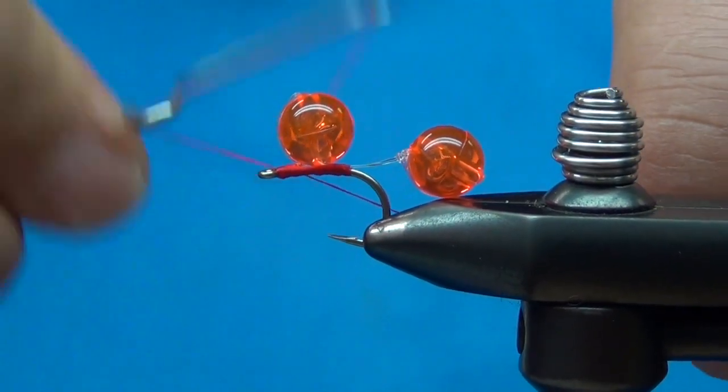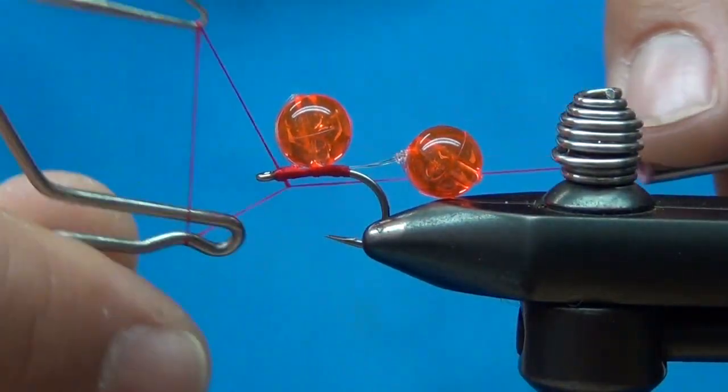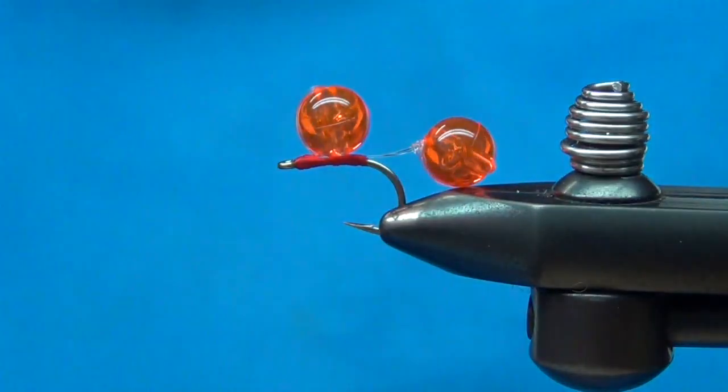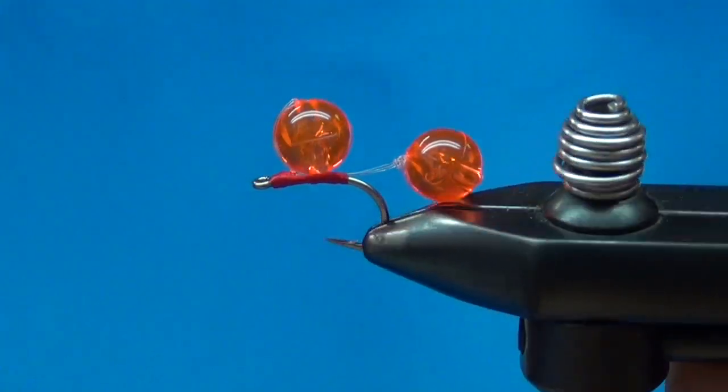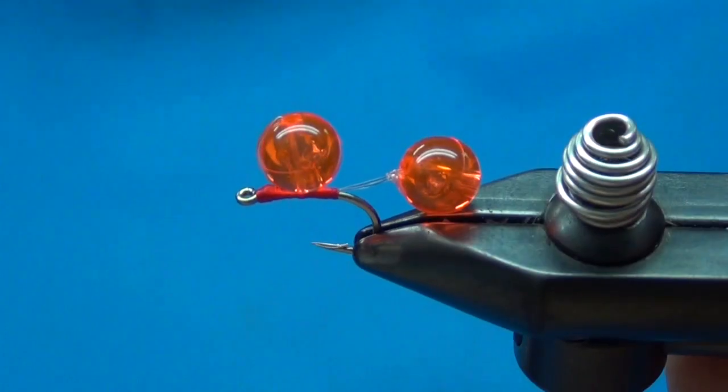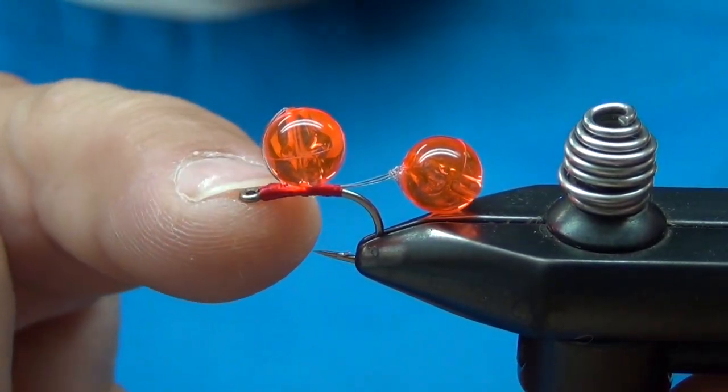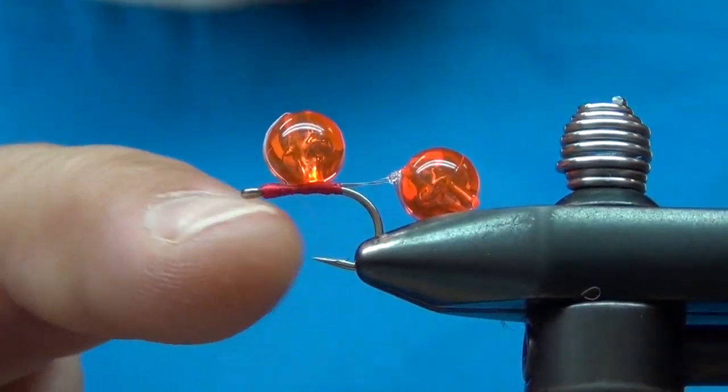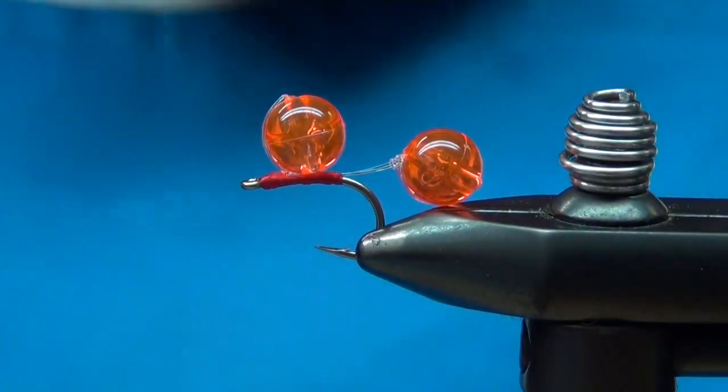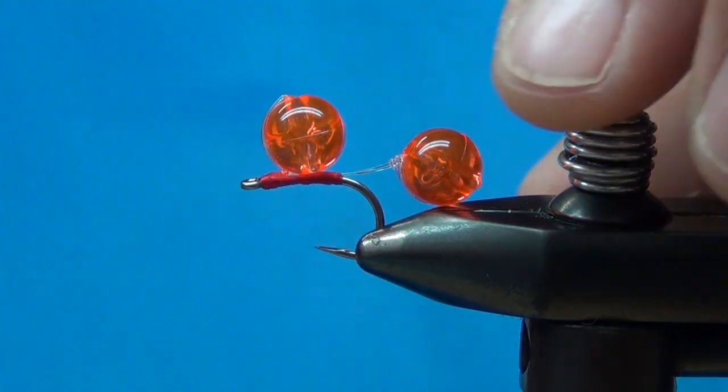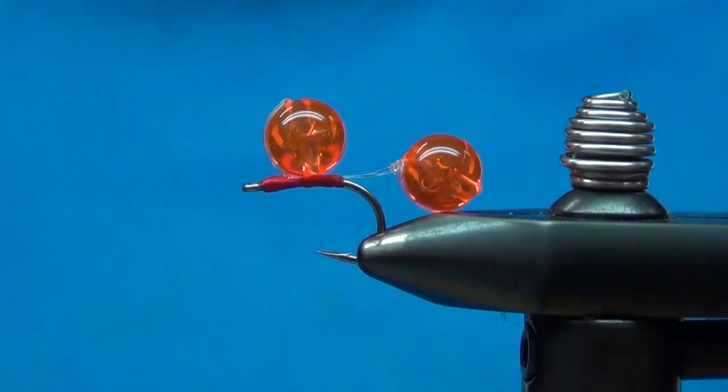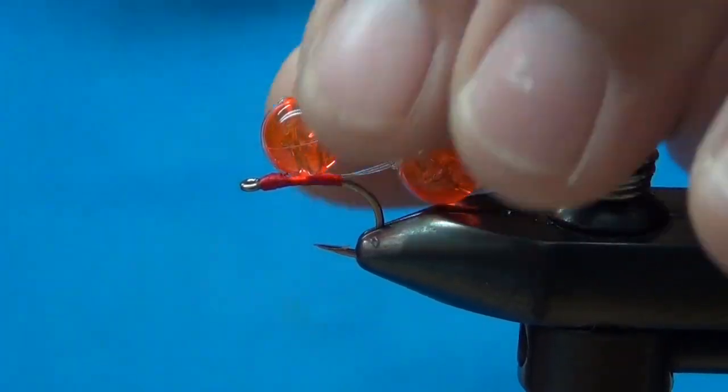I'm going to put a little bit of head cement on this fly, on the threads, just because the teeth on those big salmon will tear that up. Put a little head cement up here, even rub some back around that thread. You could also use like a UV flow and put that on there.